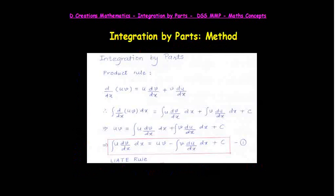If you wish you can substitute it with c prime, but that is not going to make any difference because it is an arbitrary constant of integration. This is the formula for integration by parts: integral of u*dv/dx dx equals uv minus integral of v*du/dx dx + c.